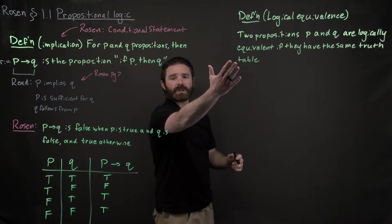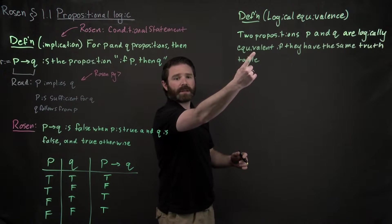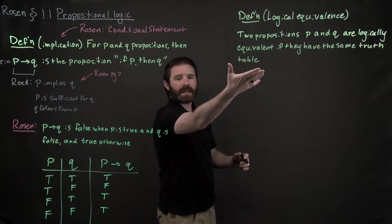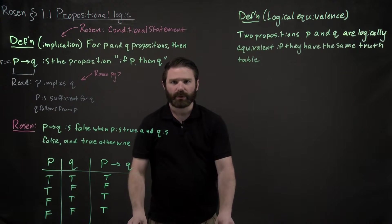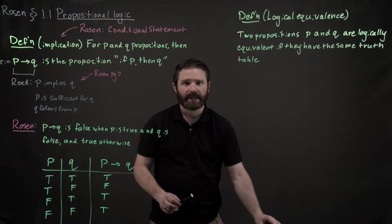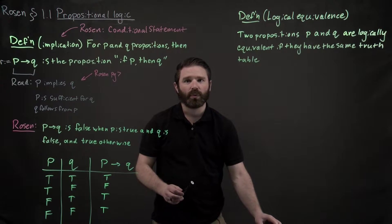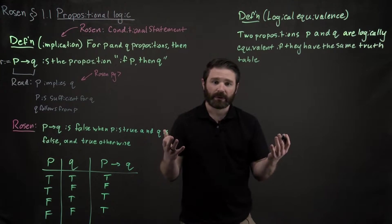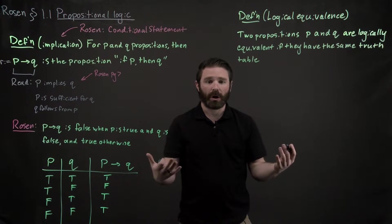So two propositions, usually compound propositions P and Q are logically equivalent if they have the same truth table. And what do I mean by that? I mean that they take on the same values no matter what the truth values of their underlying variables are.